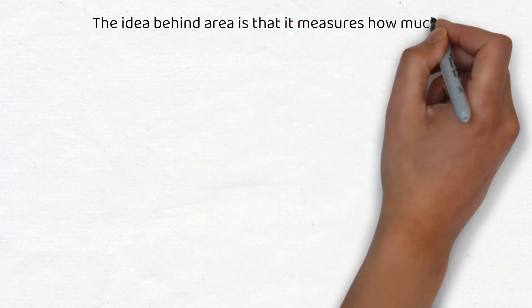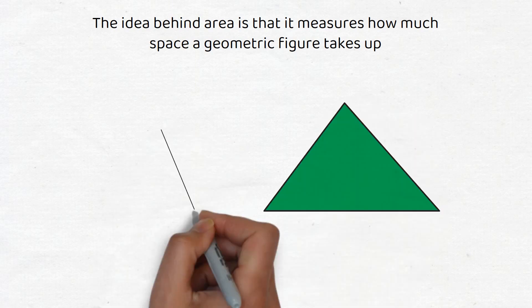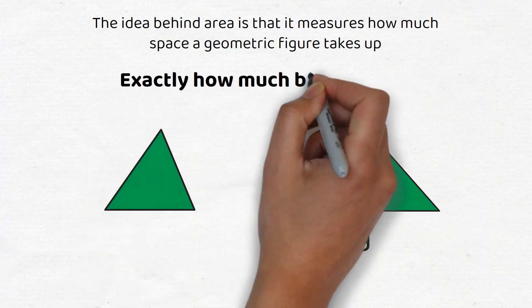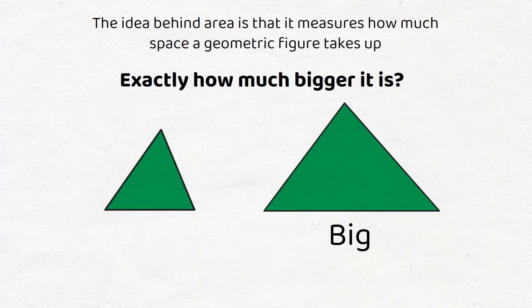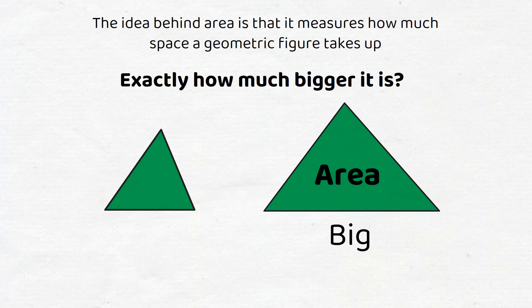The idea behind area is that it measures how much space a geometric figure takes up. For example, the triangle on the right of this diagram is bigger than the one on the left. What we would like to do is quantify exactly how much bigger it is. The quantity, or number, describes how much space a figure takes up, and that is known as its area.